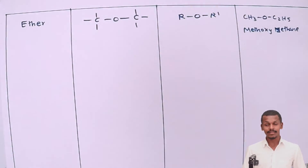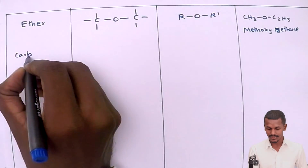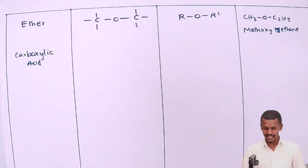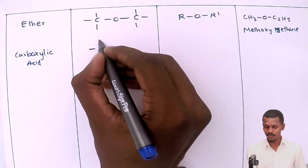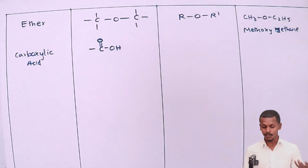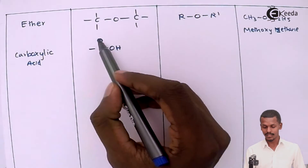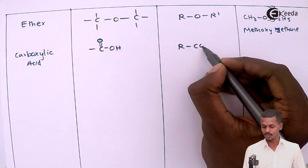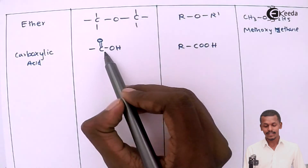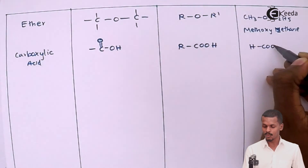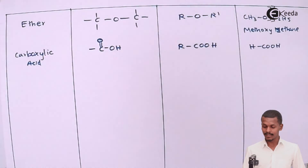The next class is carboxylic acids, an important classification of organic compounds. They are identified by the functional group –COOH (the carboxyl group). The general formula is RCOOH. An example is HCOOH, known as formic acid, or by its IUPAC name, methanoic acid.